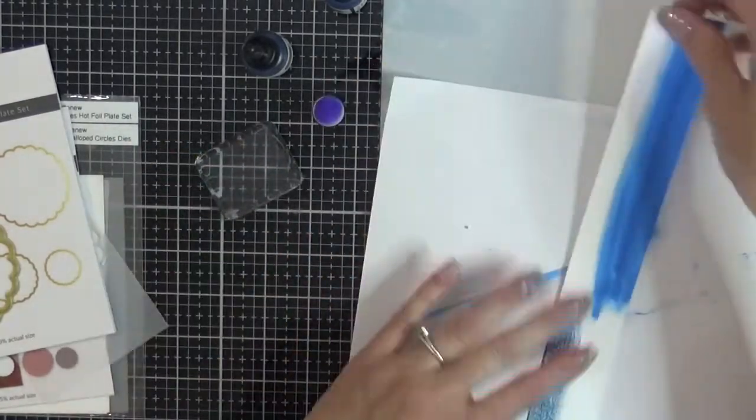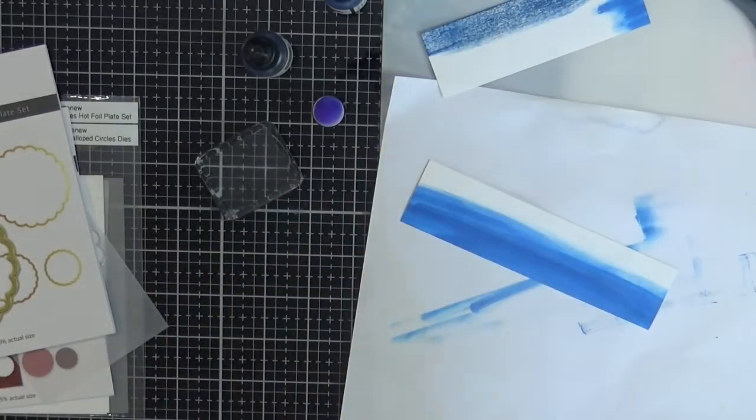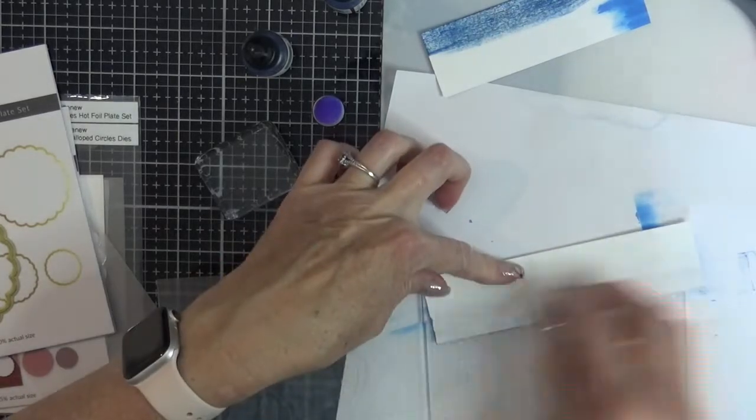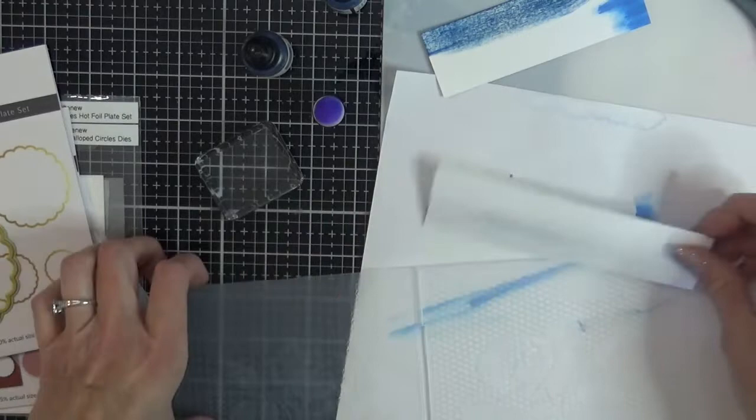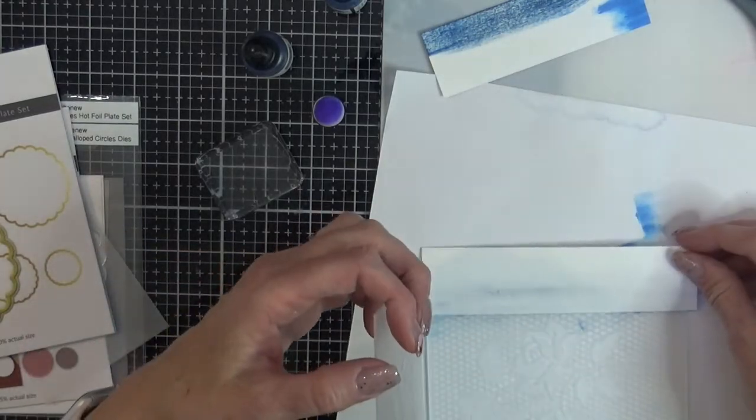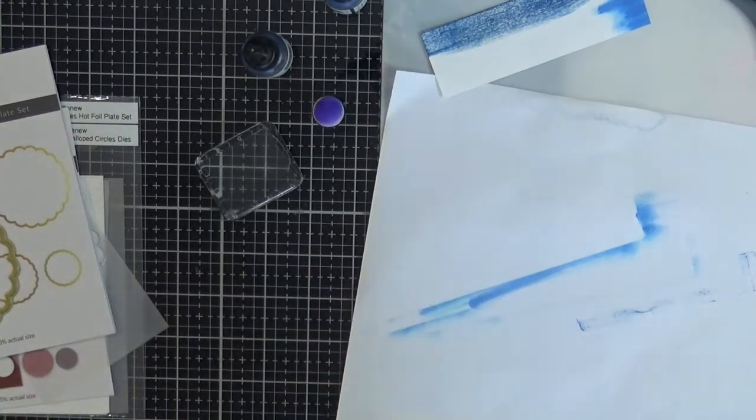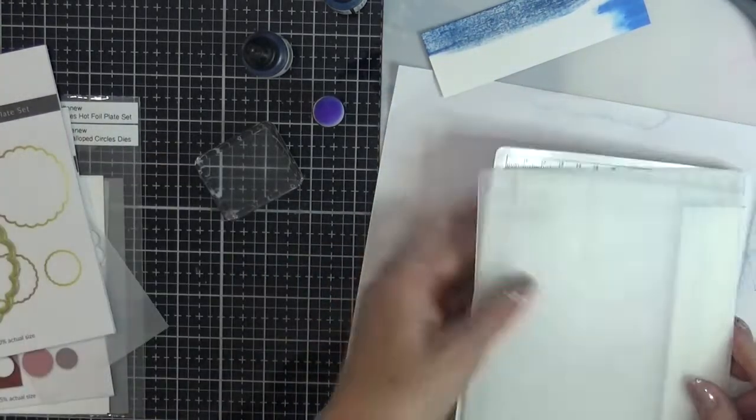I'm going to run this piece through the Vintage Lace 3D embossing folder and I'm going to rub a wet baby wipe on the back side of this before I run it through. And I will set that aside to dry.